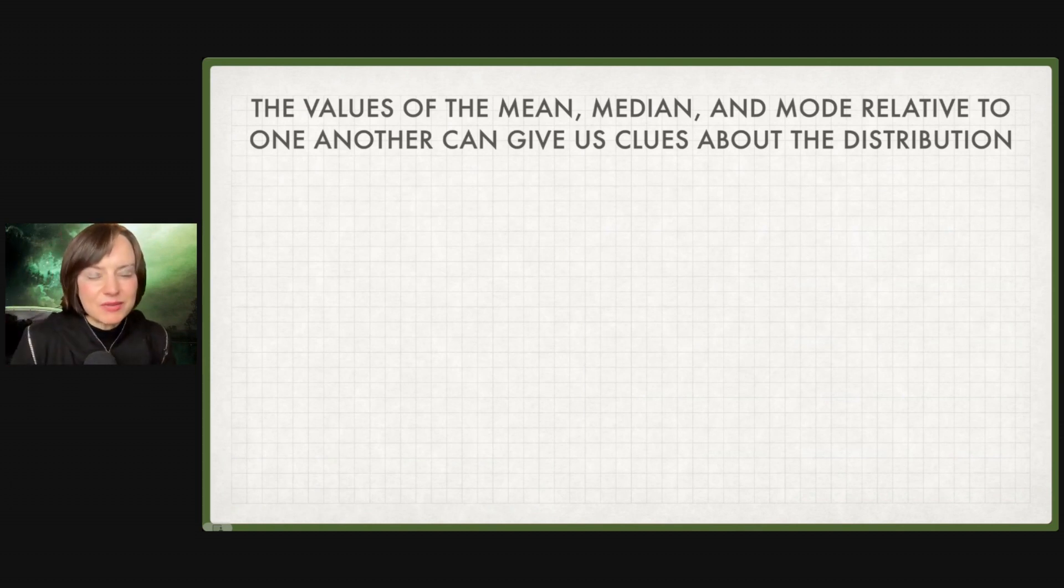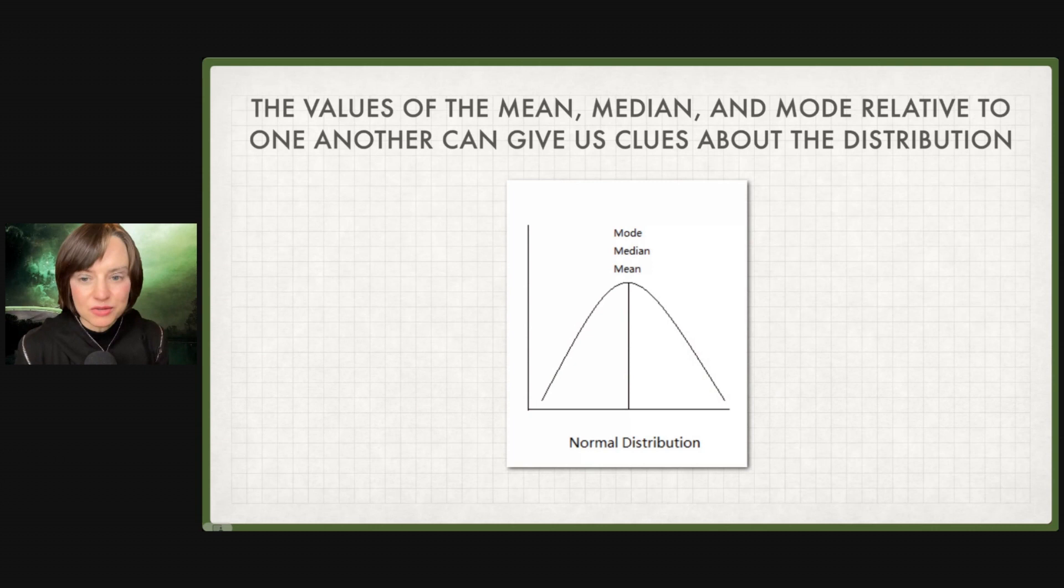In addition, putting the pieces from our distribution and our central tendency together, the values of the mean, median, and mode relative to one another can give us clues about the distribution. So a normal distribution or the Gaussian distribution or a bell curve. If the mean and the mode and the median are all the same, we're working with a normal distribution. Most observations are in the middle, and then we have a few that are very high and very low.